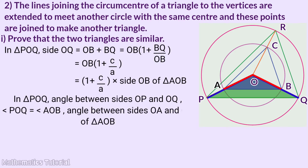Triangle POQ angle POQ is equal to angle AOB. So the two sides of triangle POQ are scaled by the same factor 1 plus C by A and the included angle is equal.